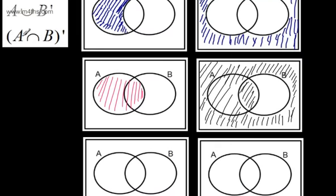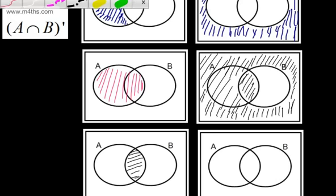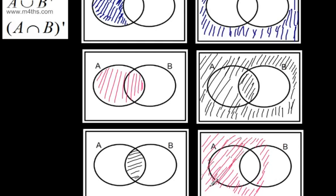This one is A intersection B complement — meaning A and not B. We know A intersection B is the overlapping middle part, so the complement of that means everything except that intersection. What we end up with is everything shaded except the middle — we leave the intersection alone. That's some basic shading, and at GCSE that's about all you need to do.